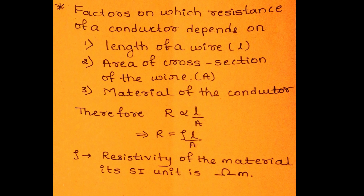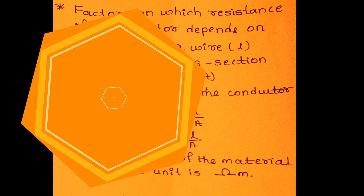Now, can you tell me what are the factors on which resistance of a conductor depends? Resistance of a conductor depends upon the length of the wire L, cross-sectional area of the wire A, and also on the material of the conductor. Resistance is directly proportional to its length and inversely proportional to its area. Combining these two factors, R is directly proportional to L upon A. Removing the proportionality sign, R equal to ρ into L upon A, where ρ (rho) is the resistivity of the material — an inherent property that does not depend upon the dimensions of the wire.